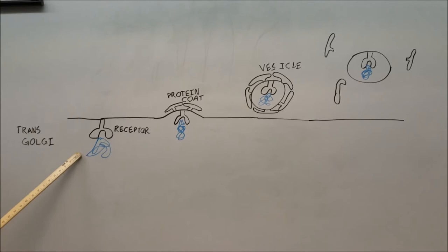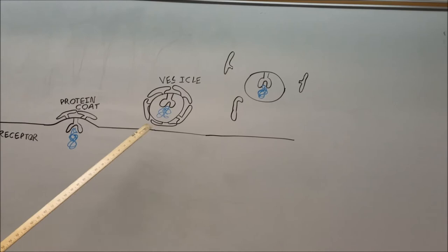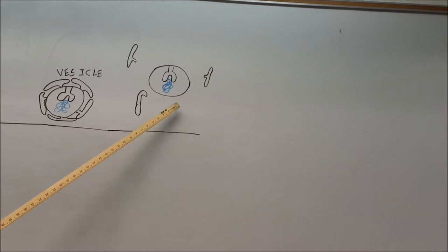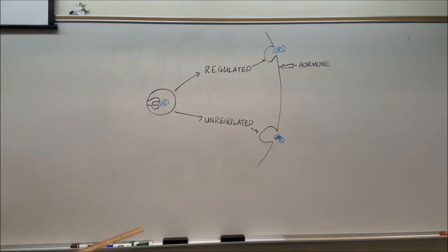By the time the protein reaches the trans side of the Golgi apparatus, the protein bonds with a certain receptor specific for that protein. A protein coat begins to form as the vesicle begins to bud, and eventually the vesicle buds completely off. The protein coat releases, leaving the vesicle to head to its intended destination, while the protein coat pieces return to the Golgi apparatus to be reused.